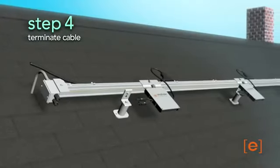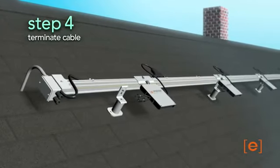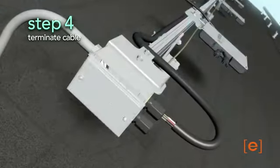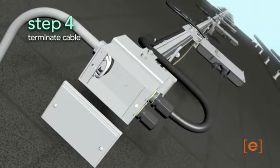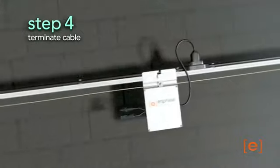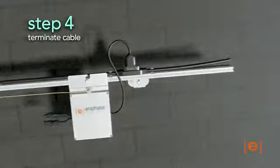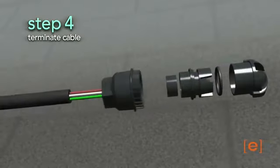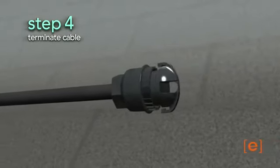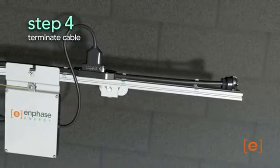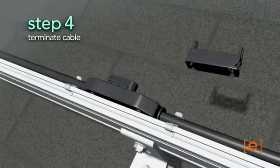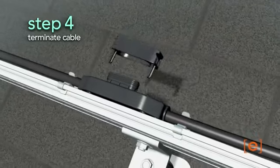Terminate the ends of the cables. Connect one end of the trunk cable to the junction box. The other end of the trunk cable must be terminated using a termination cap. Unused connectors must be covered using the caps provided.